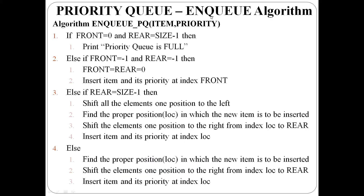Enqueue algorithm. There are two parameters. ENQ takes item and priority. There are four cases. Case one: if front is zero and rear is size minus one, the priority queue is full — display error message, insertion not possible.